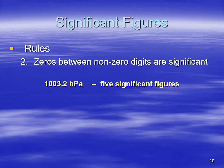Rule two: zeros between non-zero digits are significant. Here you have a pressure of 1003.2 hectopascals. The two zeros between the one and the three are significant, so you have five significant figures and you're uncertain in that last digit, 0.2.